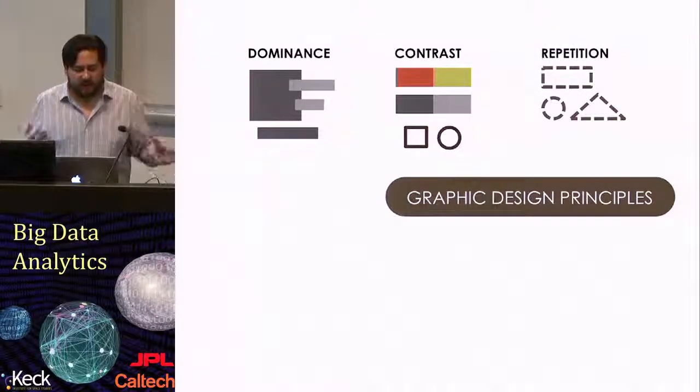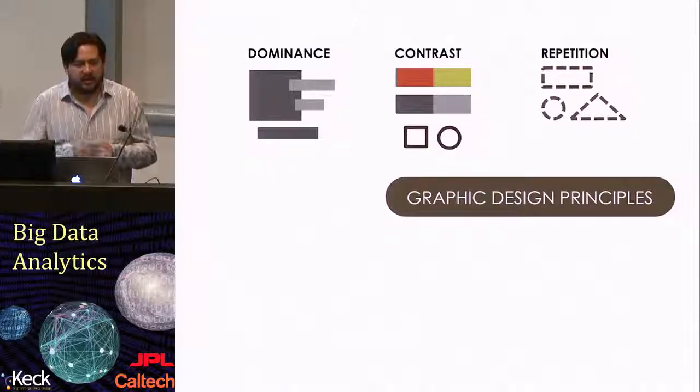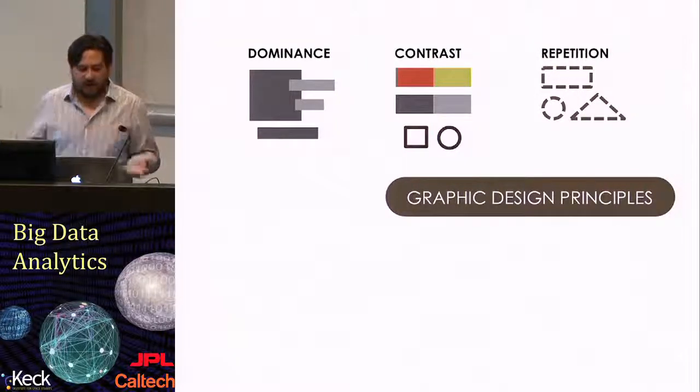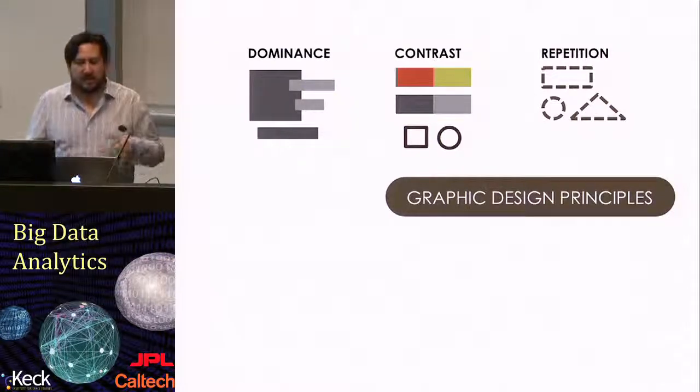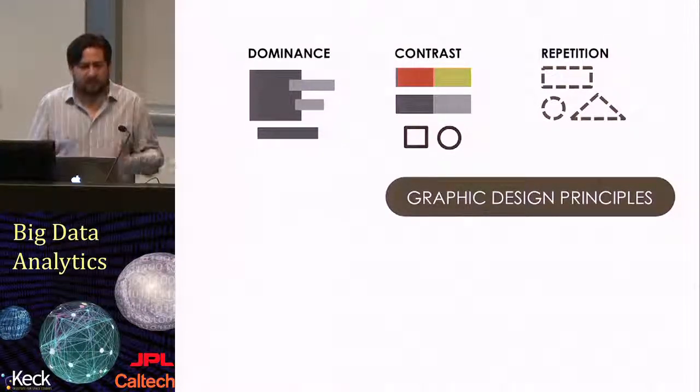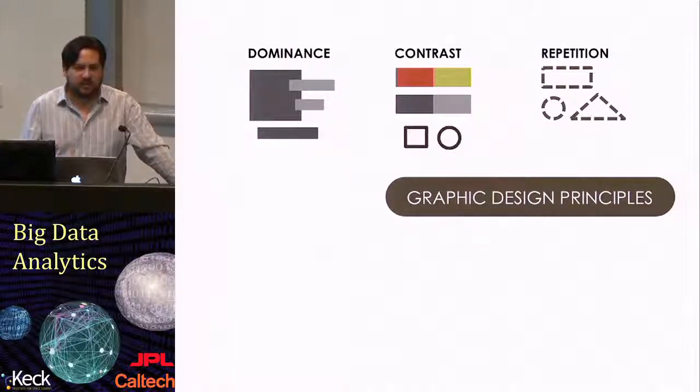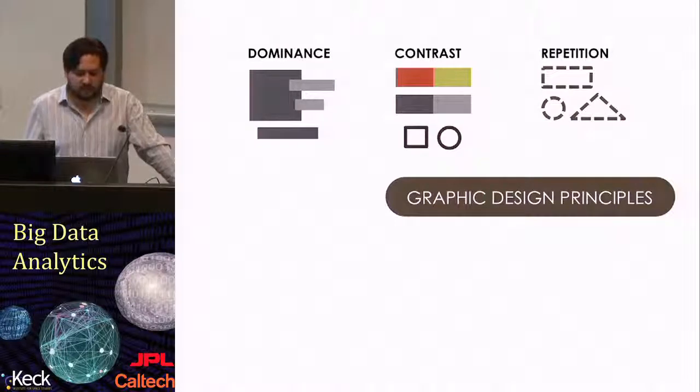Contrary, if you want to say something is very closely tied together, it doesn't have to be the same shape. You can actually use any kind of repetition. You can use an outline and if the outline is repeated, then automatically you're tying information together. So that can be a way to actually present information that is actually meant to be seen as together.